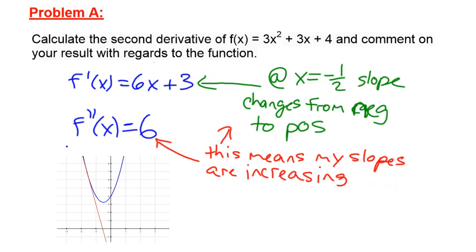Looking at problem A — we're talking about what the second derivative tells us. For this function, the first derivative is 6x+3, and the second derivative is positive: it's 6. So this entire function is concave up, having a positive second derivative. The slopes are always increasing. Think about the diagram with the parabola rotating in a counterclockwise manner — that's what the rotation would look like here. The whole curve is concave up.